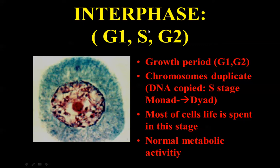Go back to the previous video for greater details on these. You'll notice I put 'growth period.' If you were to list the sequence, you'd start at G1 and go all the way around, or maybe you'd start at mitosis, talk about cytokinesis, then go to G1. Chromosomes are going to duplicate themselves — you're going to grow and then get to the S stage. Envision the pie chart. If you're in G1, you're doing most of the normal metabolic activity.